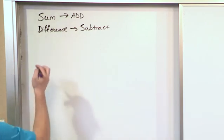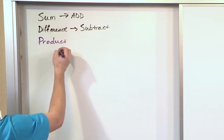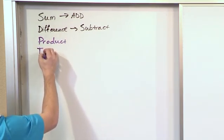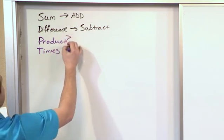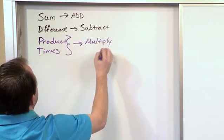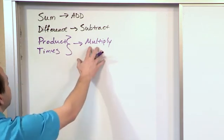If you see something like the product, like the product of two numbers, or when some number is three times another number, these words mean multiply. So a lot of times you'll say, the product of three and seven, or this car is three and a half times bigger than another car. Those mean multiplication.